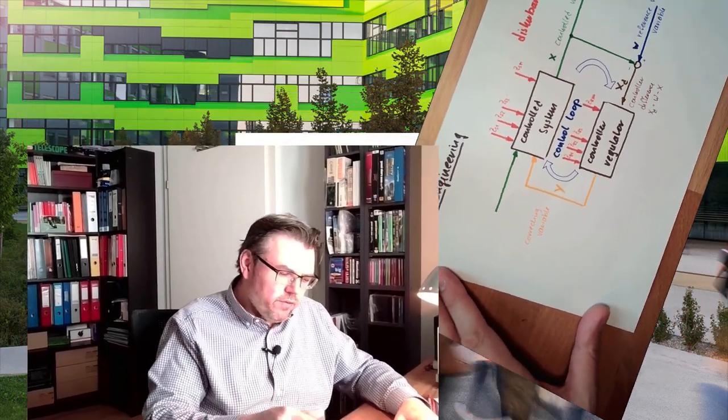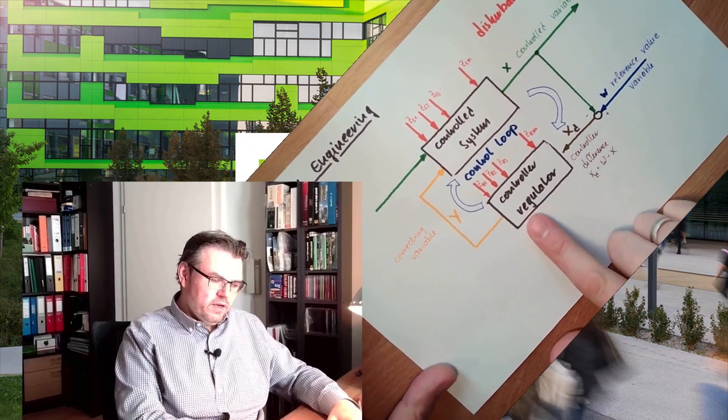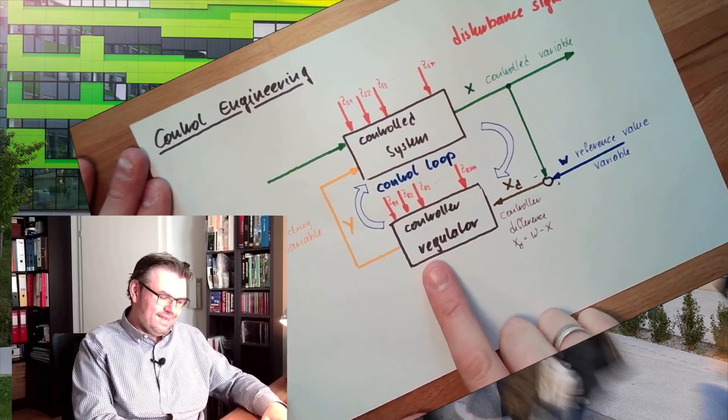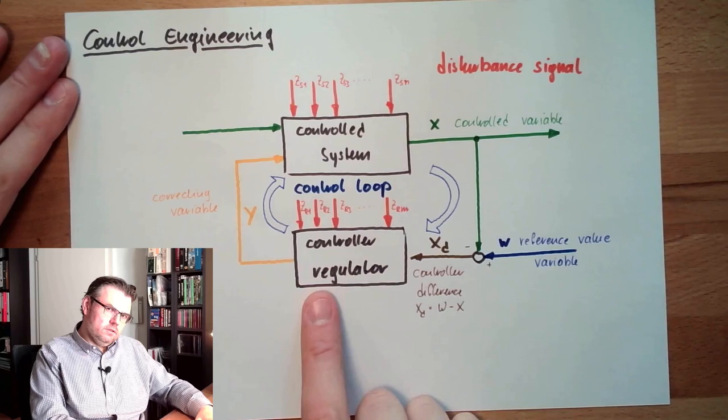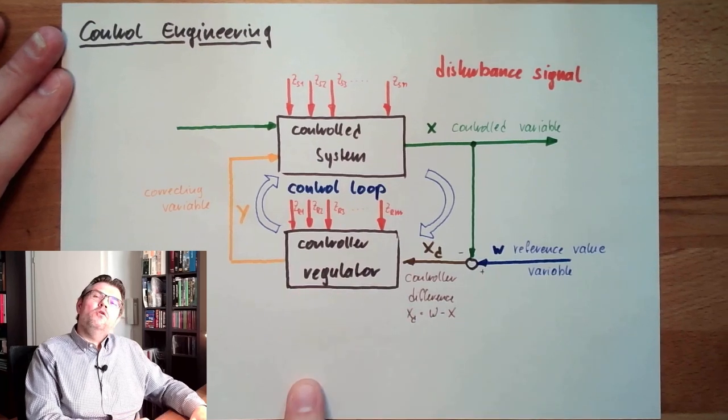So now we can start to think about what is necessary to select or to build a control system. Where do you think to start? Look at this picture. Where do you think we start? By selecting the controller, right? That would be a bad choice. I tell you why.